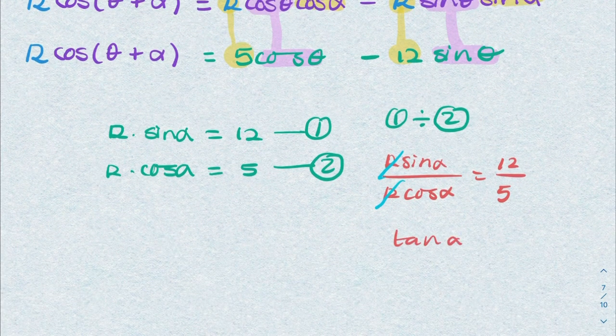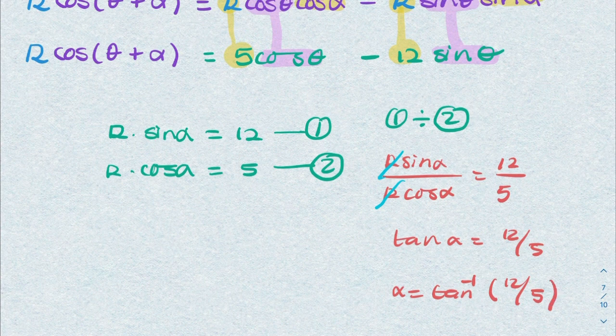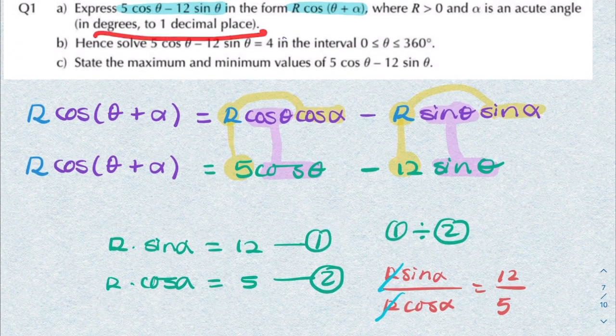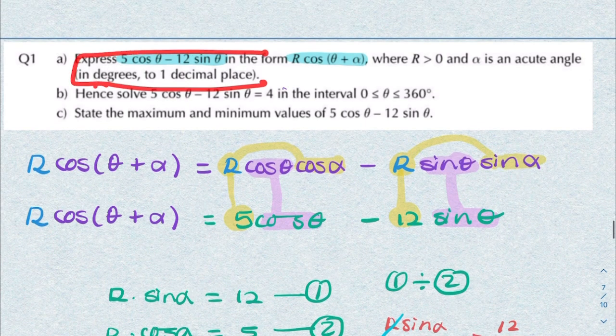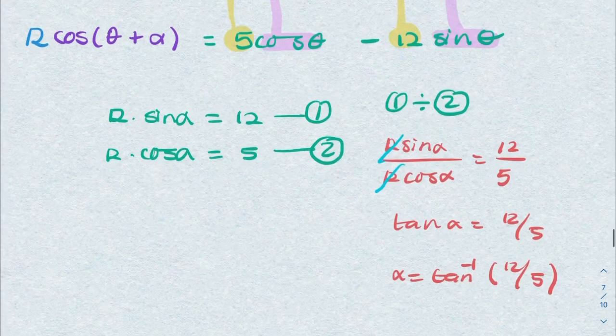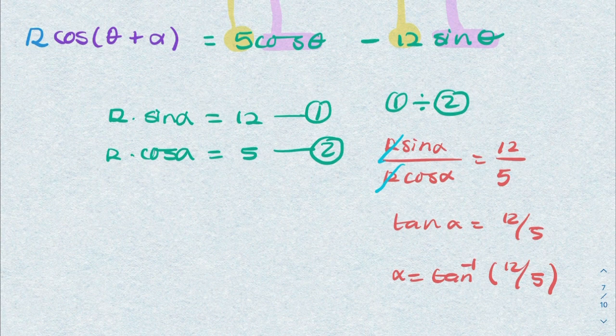tan alpha equals 12 over 5, or alpha is the inverse tangent of 12 over 5. In the question they said they want the answer in degrees, so make sure your calculator is in degrees. Inverse tan of 12 over 5 is 67.4.